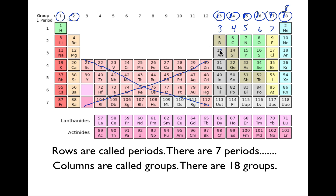So if an element is in group 13, that whole column has three valence electrons. If it's in group 14, it has four. Group 15 has five, group 16 has six, group 17 has seven, and group 18 has eight.